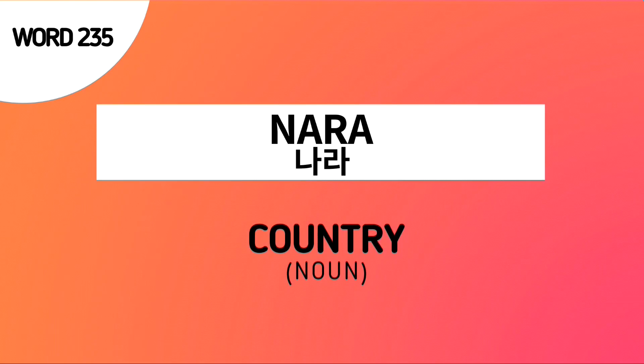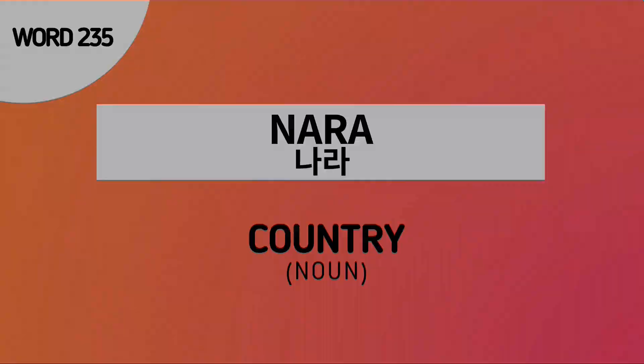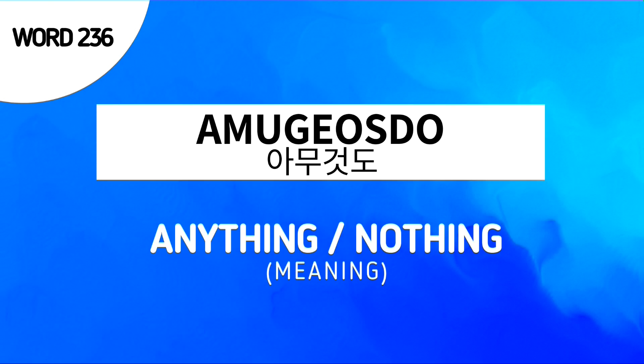Next word is 나라 (Nara). This is a noun which means 'country.' Again, Nara means country. Next word is 아무것도 (Amokotto). This is used to say 'anything' or 'nothing' in Korean. Again, Amokotto means anything or nothing.